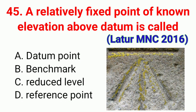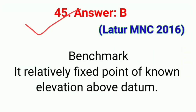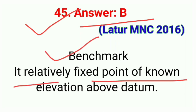Question number forty-five: A relatively fixed point of known elevation above datum is called. The correct answer is option B, benchmark. A benchmark is a relatively fixed point of known elevation above datum.